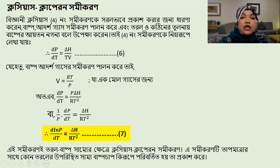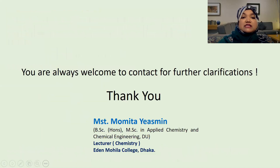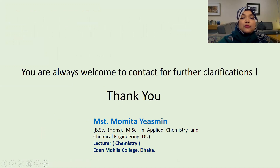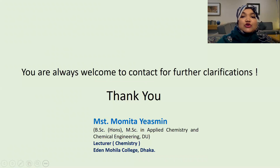এই সমীকরণটি হচ্ছে ক্লসিয়াস ক্লাপেরঁ সমীকরণ — কী করে তরল বাষ্প সমতার ক্ষেত্রে এই সমীকরণটি আসলে বুঝায়। এই সমীকরণটি তাপমাত্রার সাথে কোনো তরলের উপরিস্থিত সাম্য বাষ্পচাপ কীভাবে পরিবর্তিত হয় তা প্রকাশ করে। এটি খুবই গুরুত্বপূর্ণ সমীকরণ — আশা করি তোমরা এটা খুব ভালো করে শিখবে এবং আমরা পরবর্তী ক্লাসে হয়তো রাউল্টের সূত্রের পরে নিব। তখন পর্যন্ত তোমরা সবাই অনেক ভালো থেকো, ধন্যবাদ সবাইকে। (This is the Clausius-Clapeyron equation — it expresses how the equilibrium vapor pressure of a liquid changes with temperature. This is a very important equation. I hope you learn it well. In the next class we may take up Raoult's law. Until then, everyone take care, thank you all.)